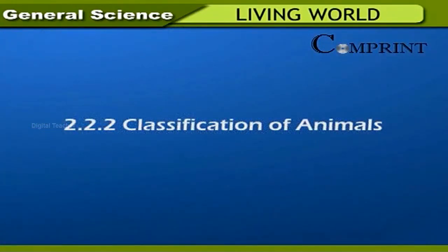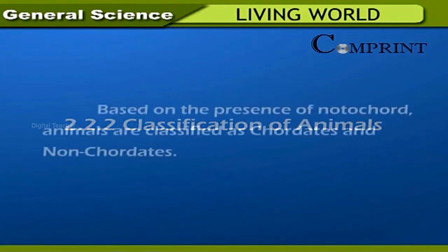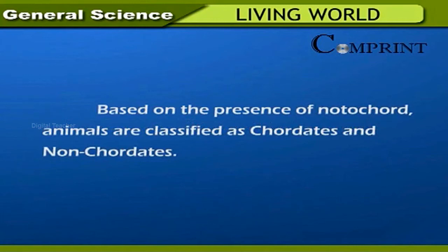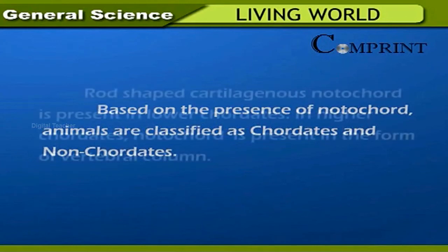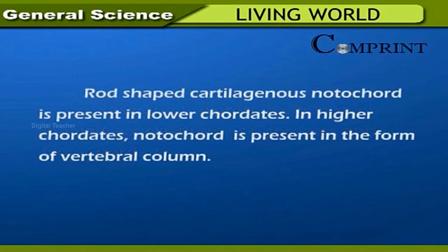Based on the presence of a notochord, animals are classified as chordates and non-chordates. A rod-shaped cartilaginous notochord is present in lower chordates. In higher chordates, the notochord is replaced by the vertebral column.